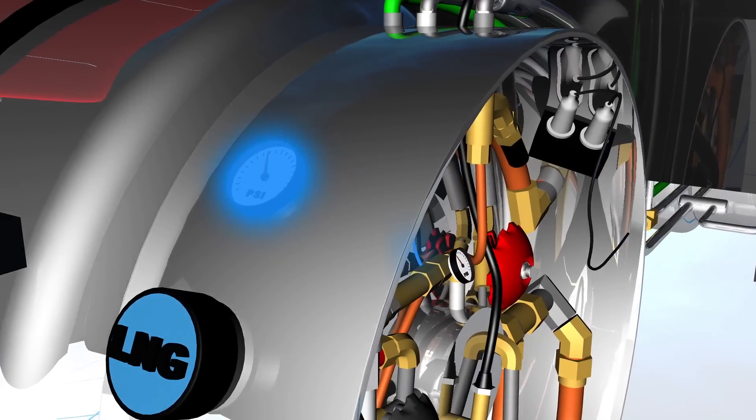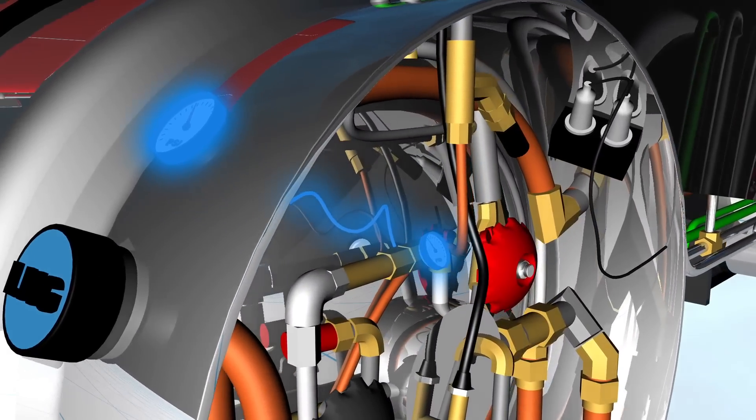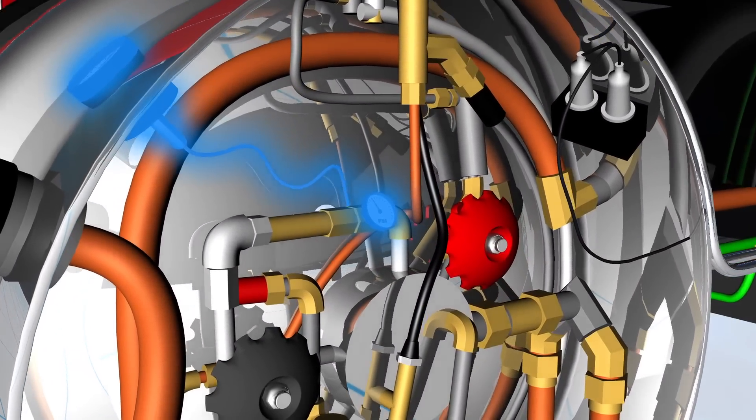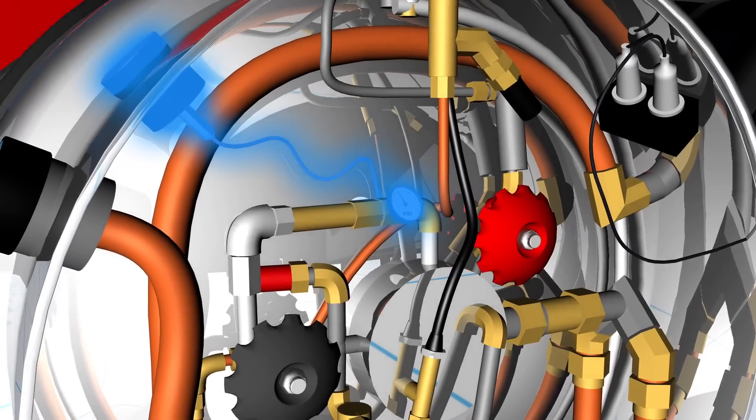Often there are two pressure gauges located at the rear of the tank. Note that these gauges only show the pressure, not the amount of LNG in the tank.